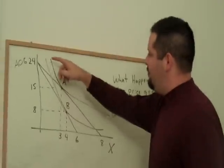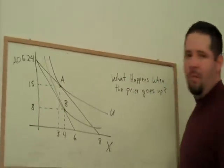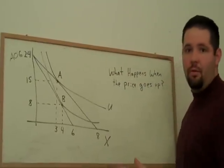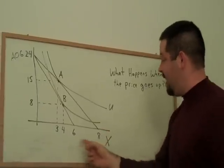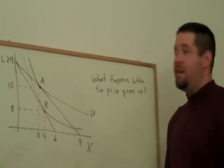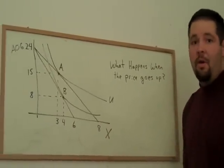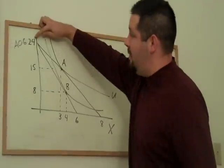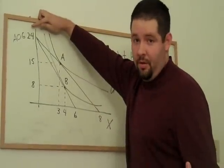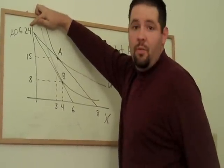As you can see, I've drawn two optimal bundles for two different prices for the good X. I've actually given you enough information to figure out the income of this individual. That's going to be because our convention is that all other goods are $1, it's going to be $24.